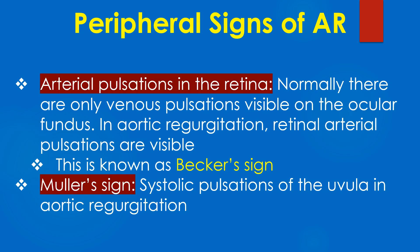Arterial pulsations in the retina: Normally, only venous pulsations are visible on the ocular fundus. In aortic regurgitation, retinal arterial pulsations are visible. This is known as the Becker sign.